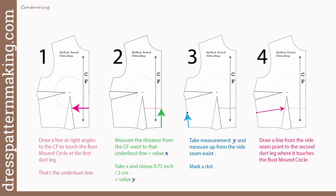So we're going to do the front first. An overview of what we're doing here is we are drawing a line at the underbust where the empire line is. That line sits under the bust mound at the center front but then slopes down a little to the side seam — it is three quarters of an inch lower at the side seam than at the center front. Step one: draw a line at right angles to the center front to touch the bust mound circle at the first dart leg — that is the beginning of the underbust line. Number two: measure the distance from the center front waist to that underbust line — that value is X. Take the value X and minus three quarters of an inch or two centimeters — the value Y. Number three: taking that value Y, measure up from the side seam waist and mark a dot. Then draw a line from that side seam point to the second dart leg where it touches the bust mound circle.